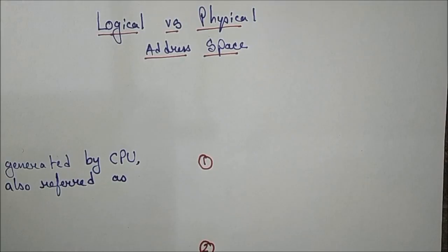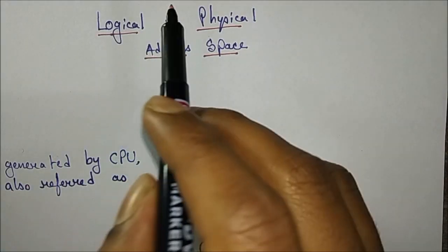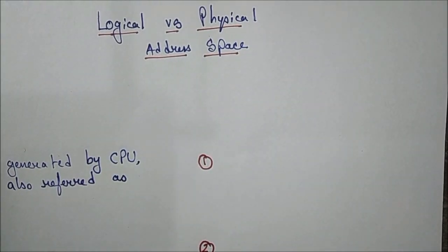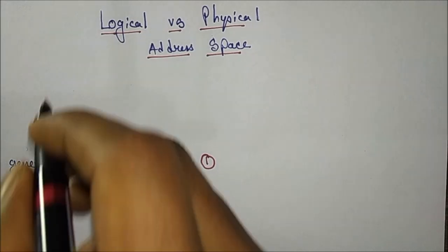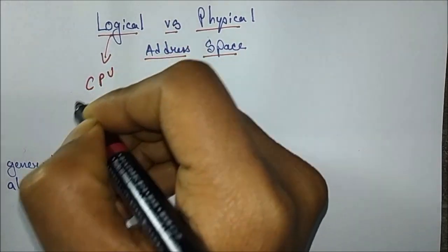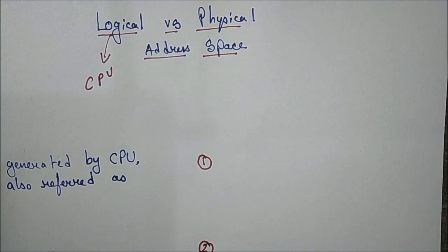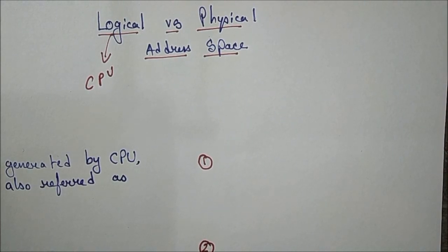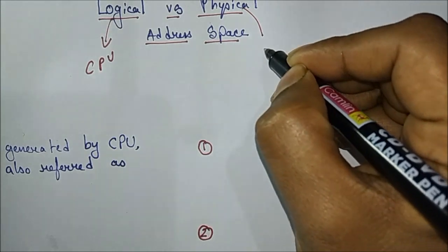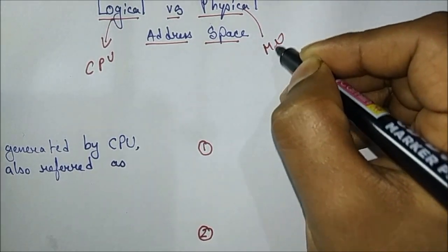Hello everyone, today we will discuss logical versus physical address space in operating systems. The first thing is what is a logical address and what is a physical address. A logical address is always generated by the CPU, which means central processing unit. A physical address is an address generated by the memory unit.